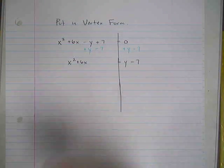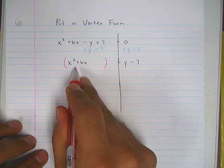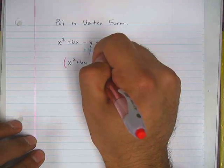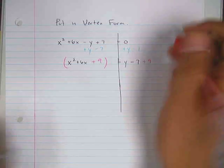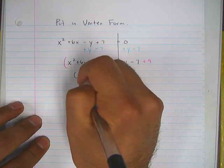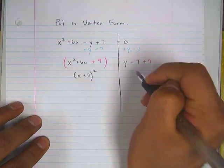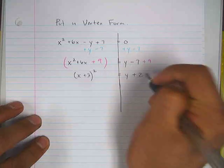Now I can complete the square. Cut this in half: 3, square it, 9. Add 9 to both sides of the equation. This becomes x plus 3 squared. This equals y plus 2.